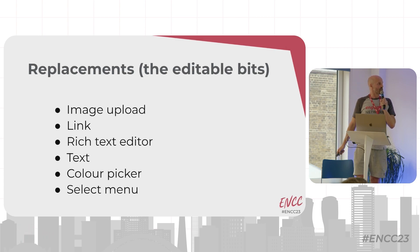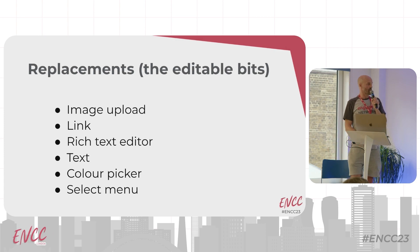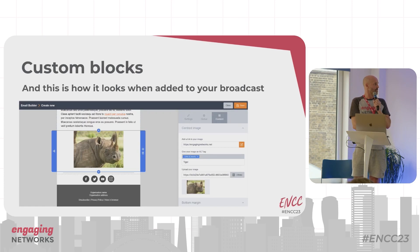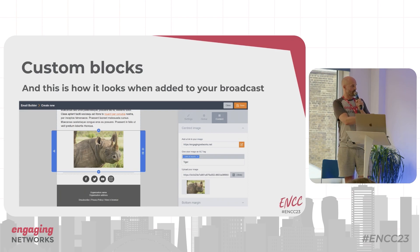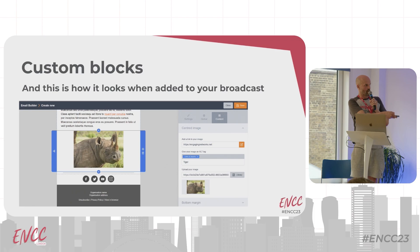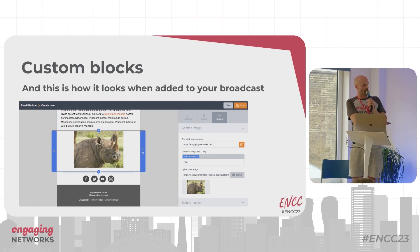The different types of replacements you can have include: image upload, link, rich text editor, text, color picker, and select menu. When you add a custom block to your broadcast, under the content tab you can see the replacements for that custom block — your link replacement, your alt tag replacement, and your image replacement.